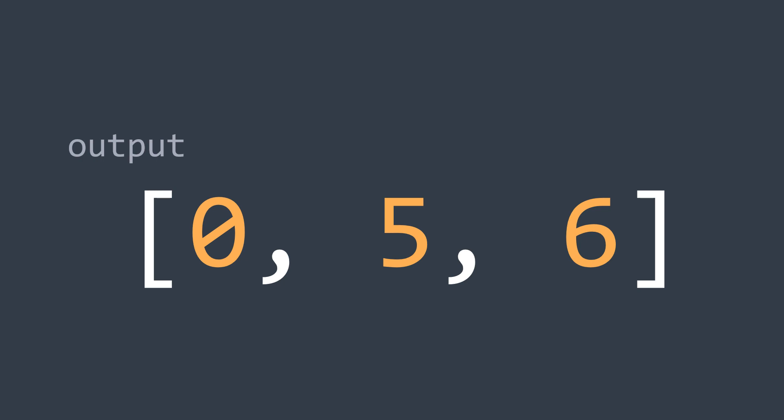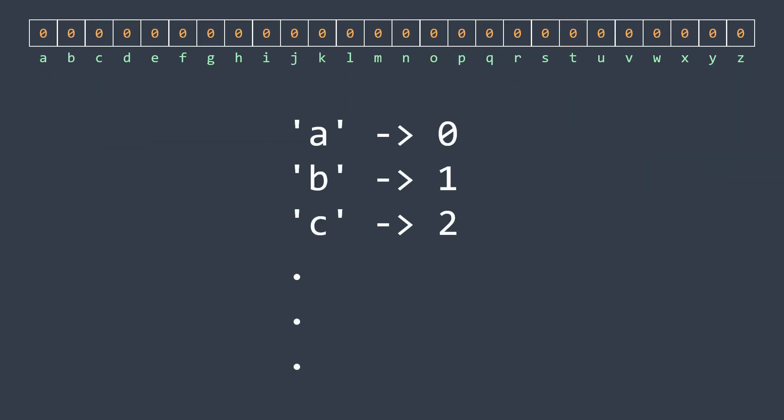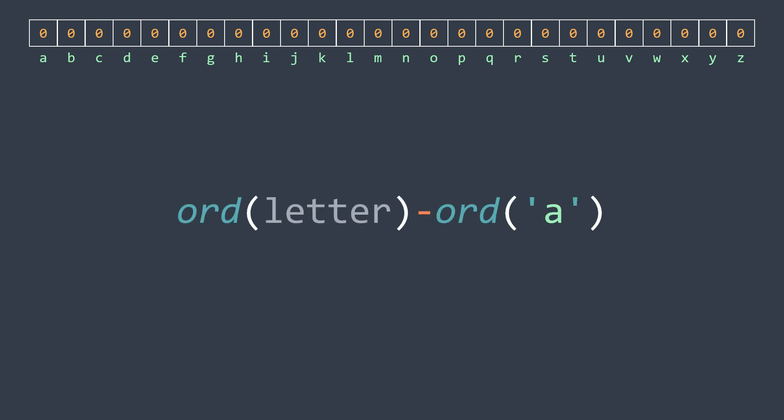Before moving to the code, you need to understand something about smap and pmap. In both, occurrences of a are at index 0, b at index 1, and so on. To map a letter to its index, we calculate the ASCII code of the letter minus the ASCII code of lowercase a. For example, the ASCII code of lowercase d is 100 and of lowercase a is 97, so the difference is 3 — meaning occurrences of d are at index 3. In code, we write ord(letter) minus ord('a').